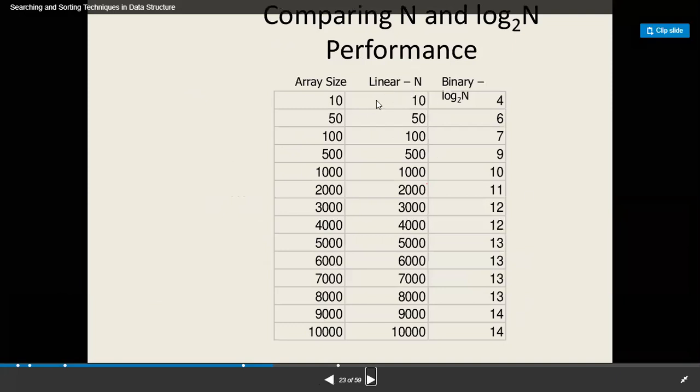Without going too technical, let's see this. In linear search, if the array size is 10, the performance is 10, but in binary it takes 4. If it's 50, linear takes 50 but binary takes only 6. If the array size is 10,000, linear search will take 10,000 but binary search will take only 14. Just imagine one algorithm is taking 10,000 hours and another algorithm is just taking 14 hours.